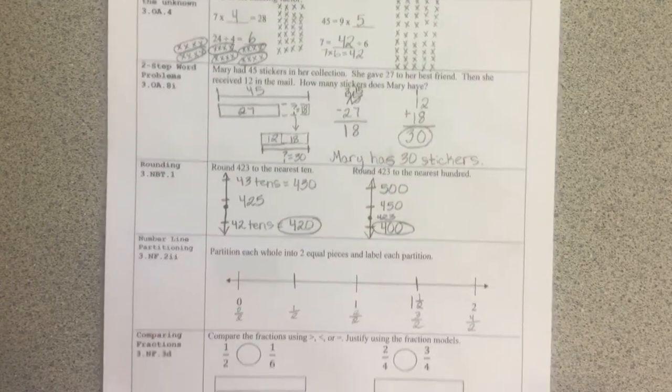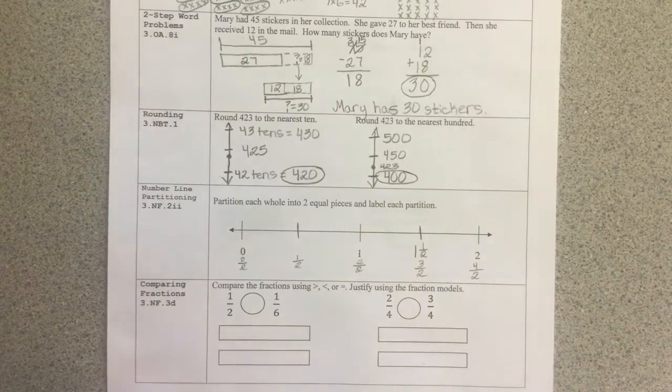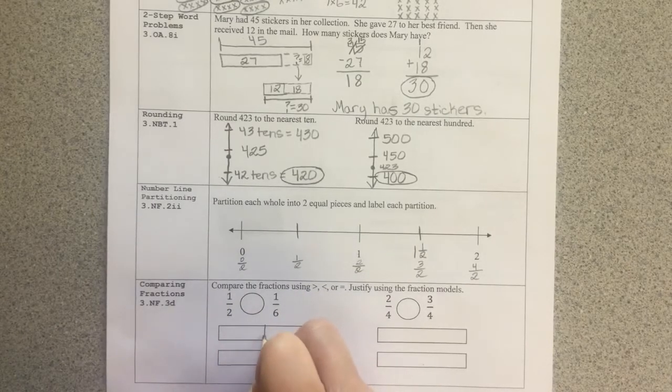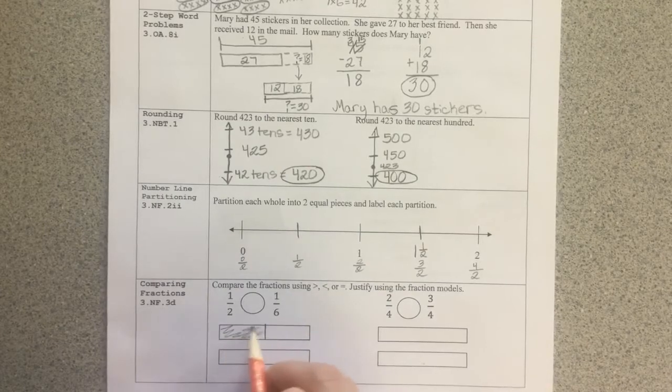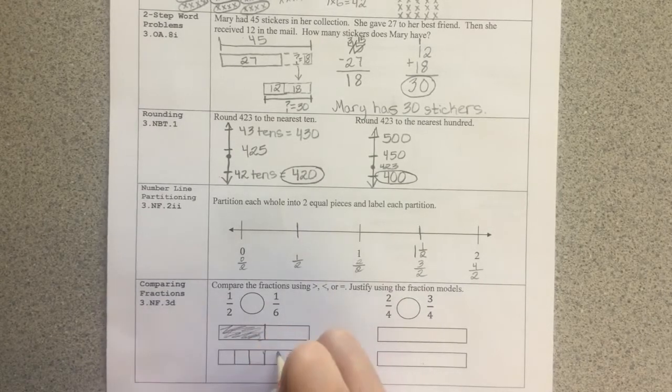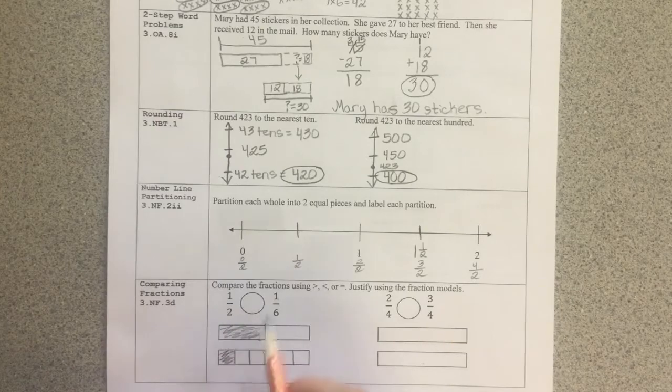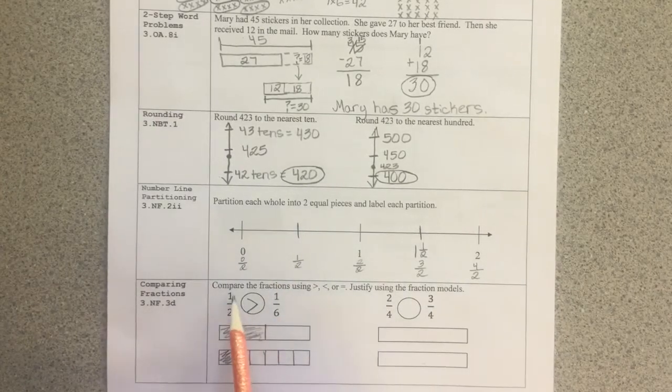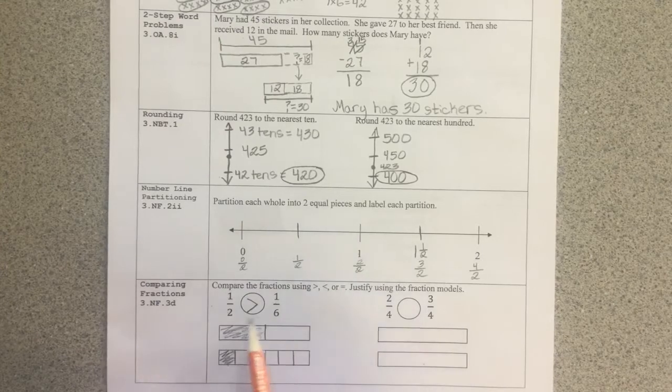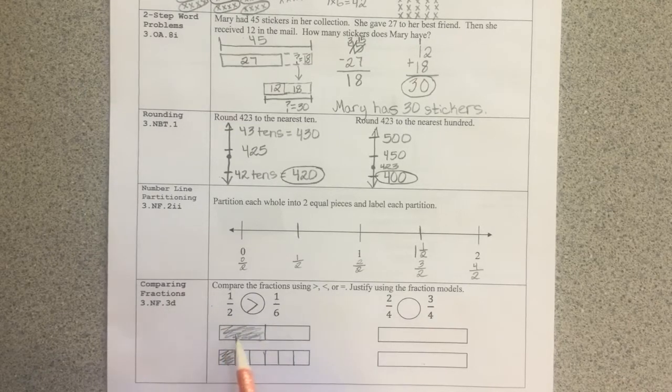Comparing fractions. Compare the fractions using greater than, less than, or equal. Justify using the fraction models. One half versus one sixth. One half, the units is halves. That means two equal pieces is what the whole is broken into. One of those pieces is shaded. One sixth. My units are sixths. So each whole is broken into six equal pieces. And one of those six is shaded. So I can see that one half is greater than one sixth. Here we're given the same number of units. We have one unit in each whole. But what we're really comparing is the size of those units. The smaller the denominator, the less pieces that the whole is broken into, so the greater the pieces are.